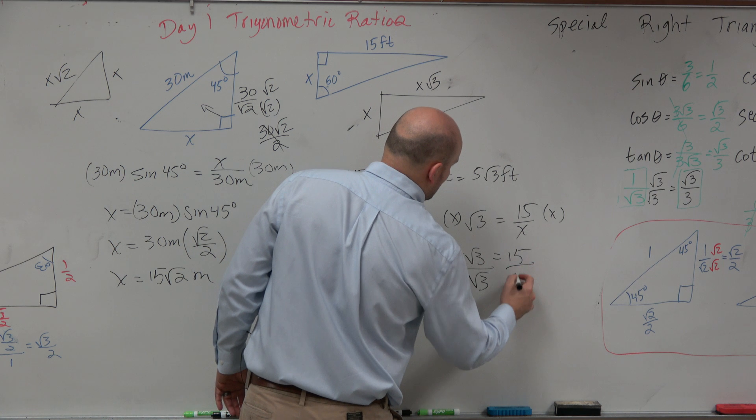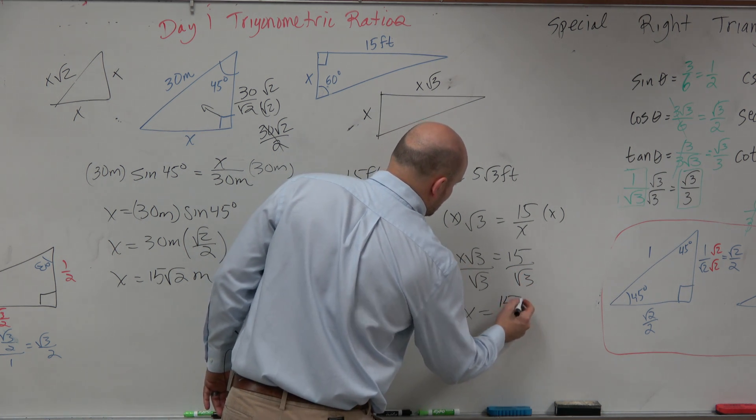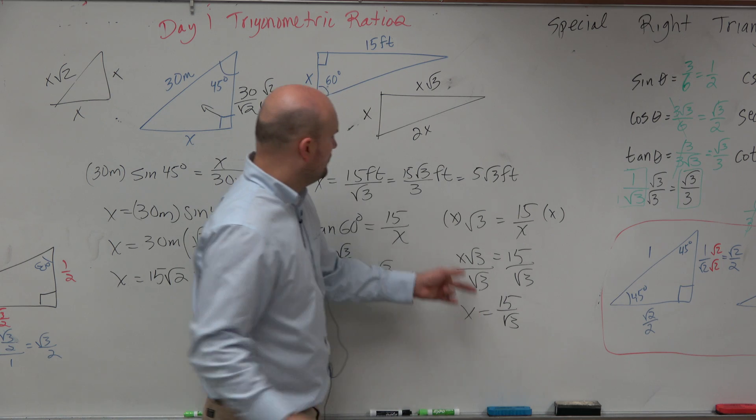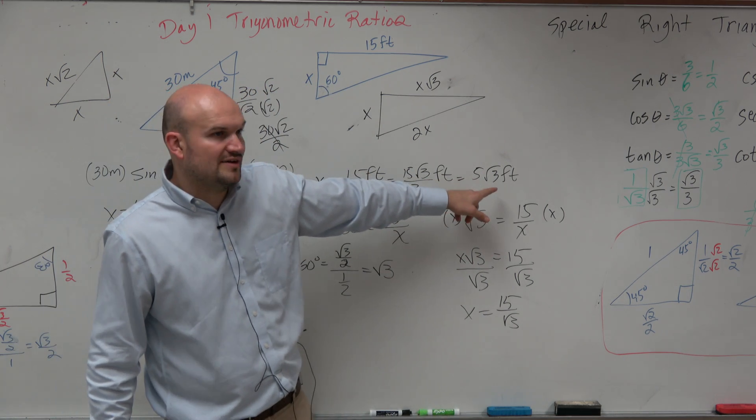Then you'd have x square root of 3 equals 15, divide by square root of 3, divide by square root of 3, x equals 15 over the square root of 3, which we know simplifies to 5 square root of 3 feet.